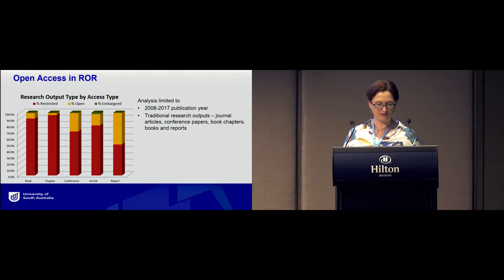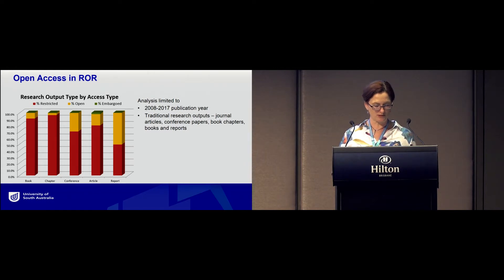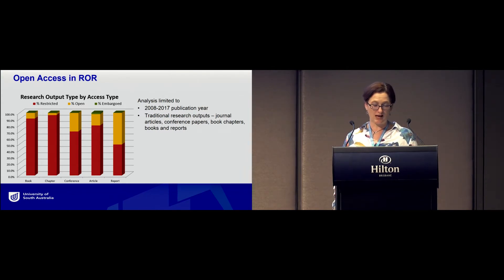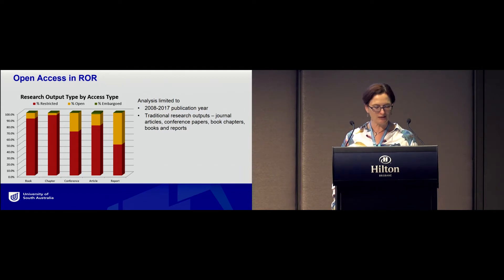The vast majority, particularly for books and chapters, is restricted, and this includes metadata-only records. But grey literature, like reports and conference papers, has a higher proportion of open access. Journal articles are gaining on them and have the highest proportion of embargoed content. With journal articles being the largest proportion of our collection, this is a significant portion of our open access collection.